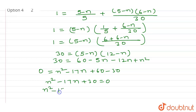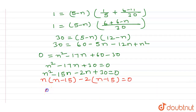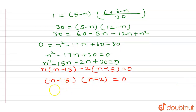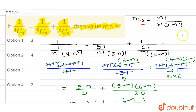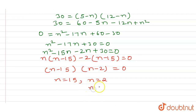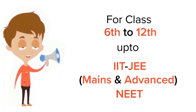Factoring: n squared minus 15n minus 2n plus 30 equals 0, giving n(n minus 15) minus 2(n minus 15) equals 0, so (n minus 15)(n minus 2) equals 0. This gives n equals 15 or n equals 2. However, in nCr, r must not be greater than n, so n must not be greater than 4. Therefore n equals 15 is rejected, and the correct answer is n equals 2.